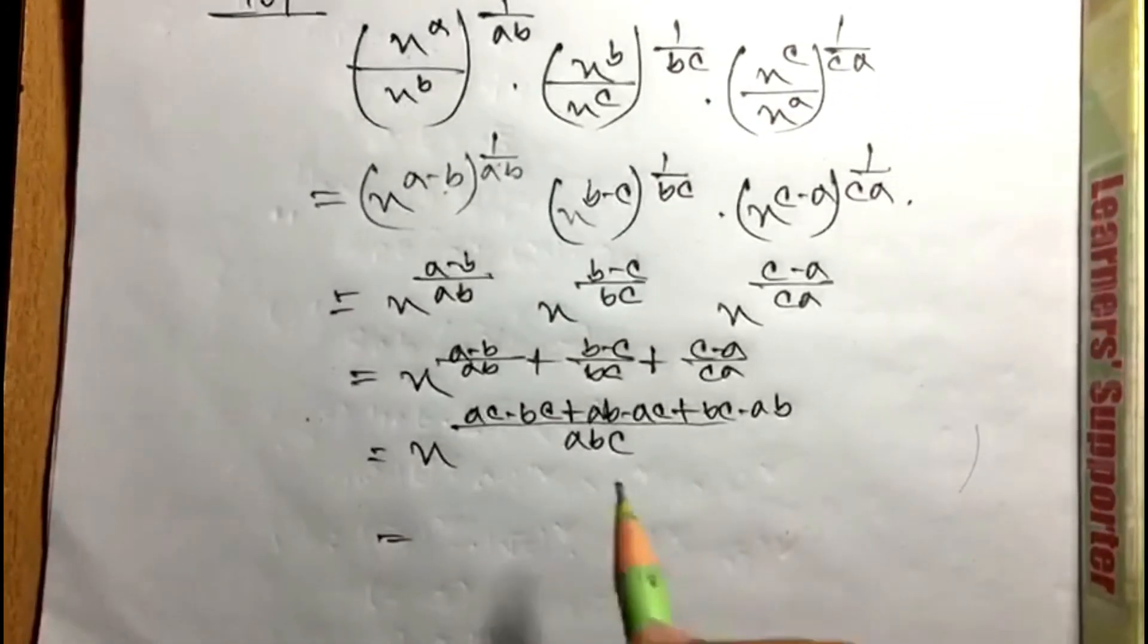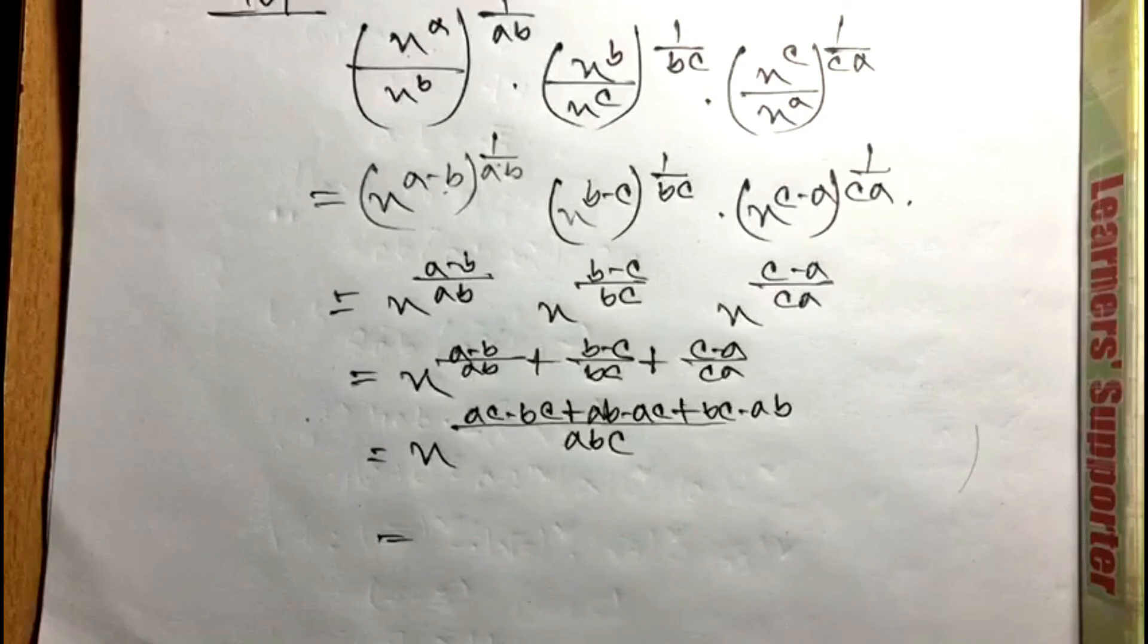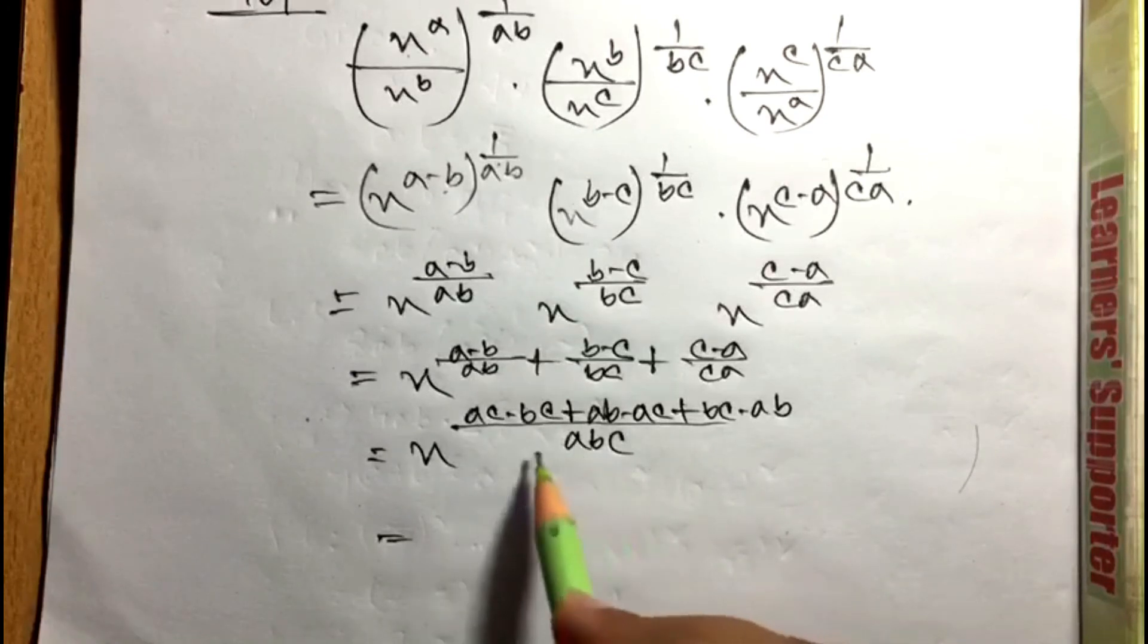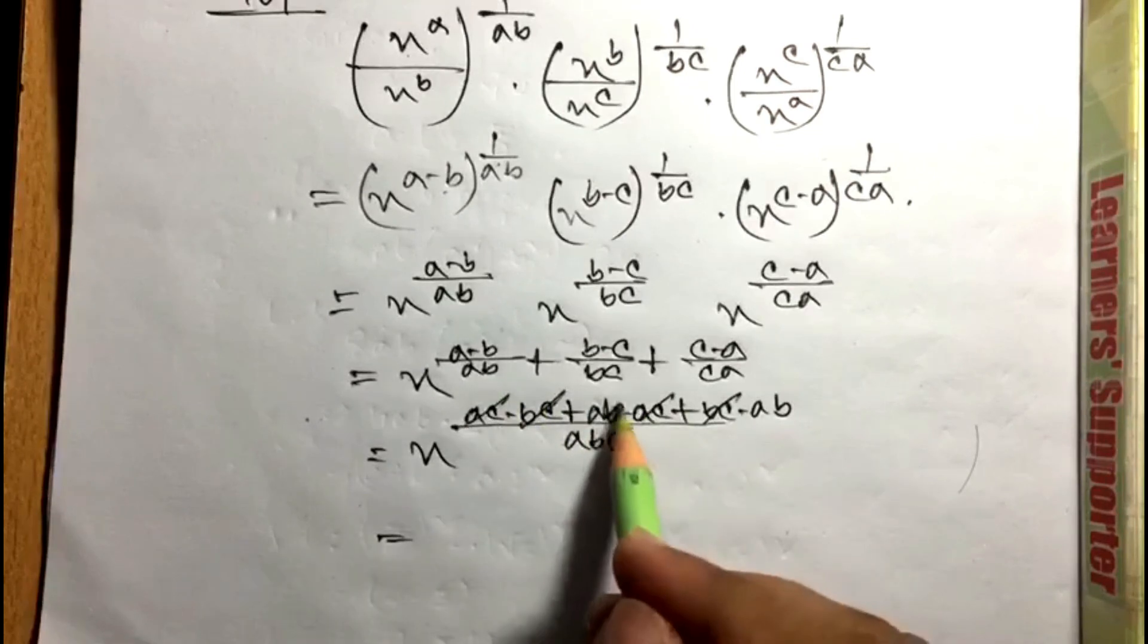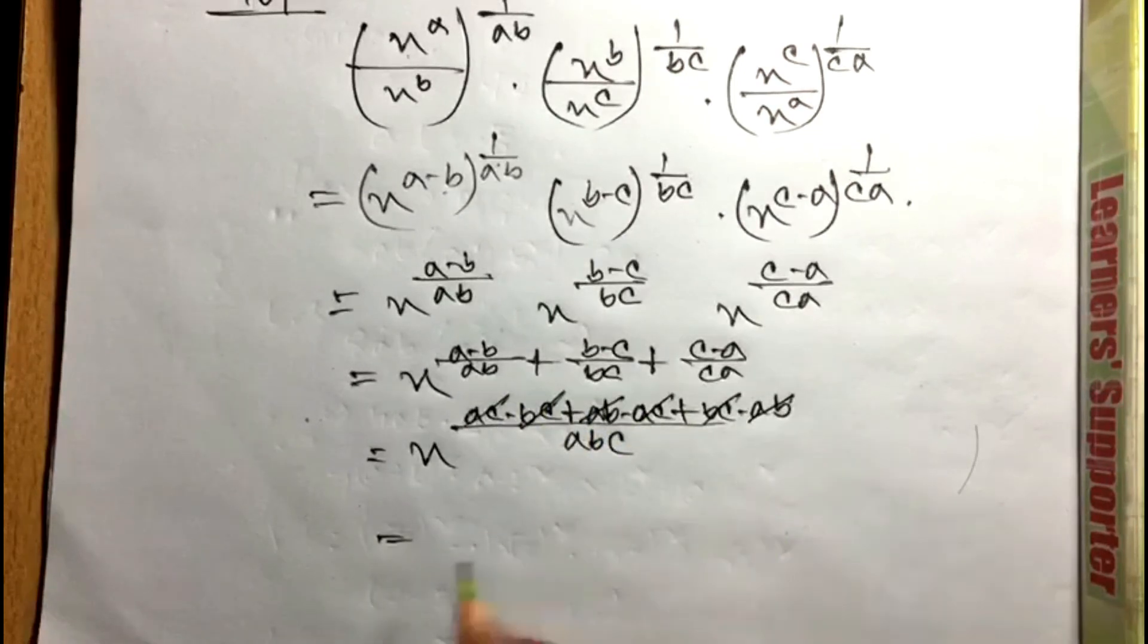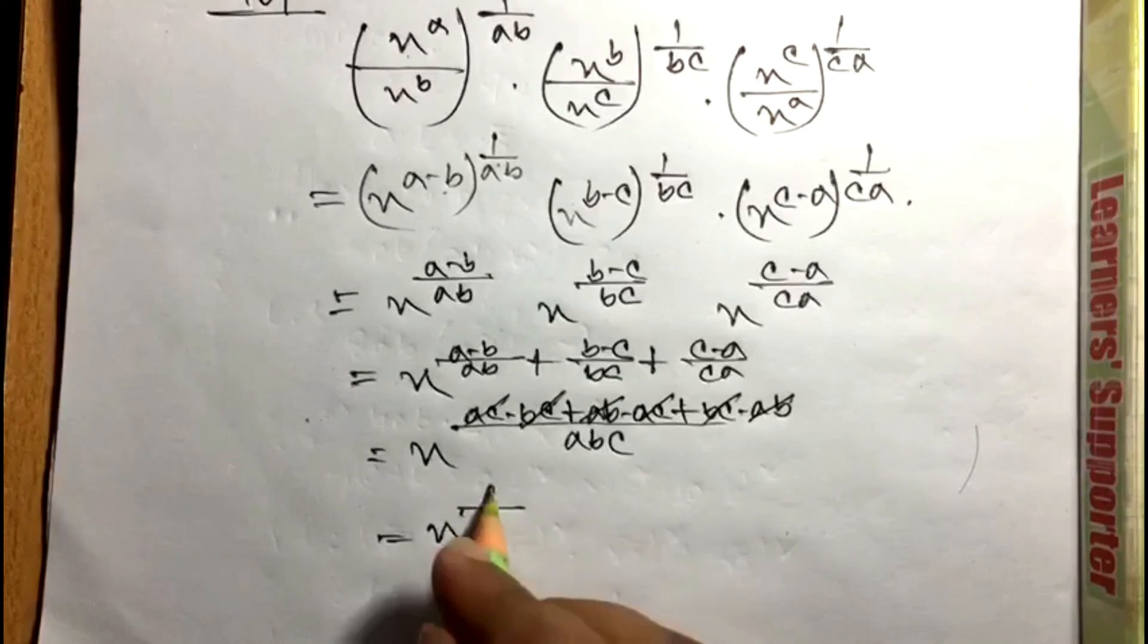So I will make the answer. This is the first step - there is the bc, ca, ca, ca terms.